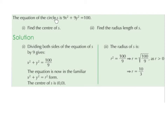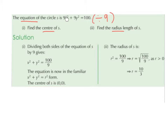The equation of circle S is 9x² + 9y² = 100. Part 1: find the center of S. We divide both sides of the equation by 9 to get x² and y² on their own: x² + y² = 100/9. The equation is now in the familiar x² + y² = r² form. Therefore, the center of S is (0, 0).